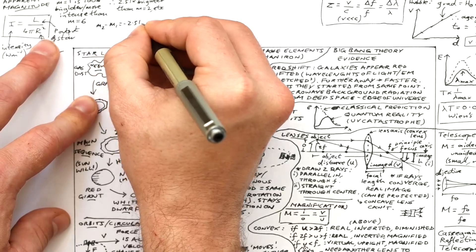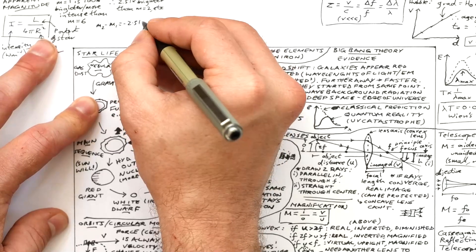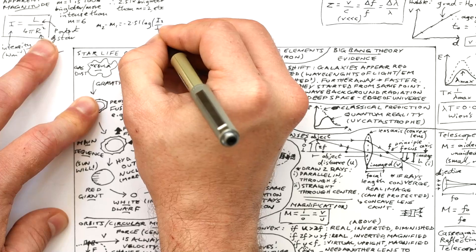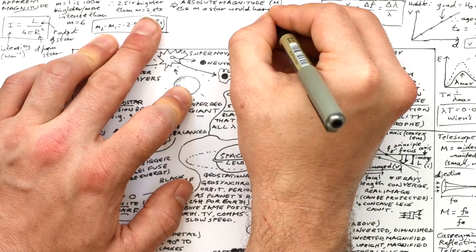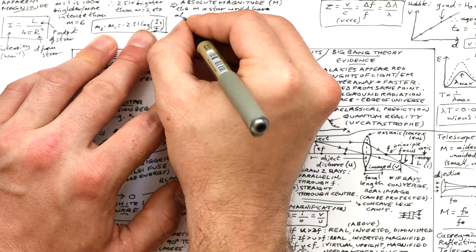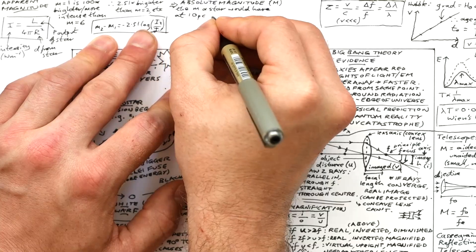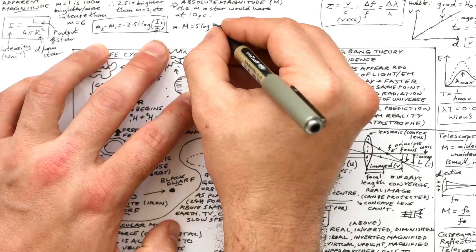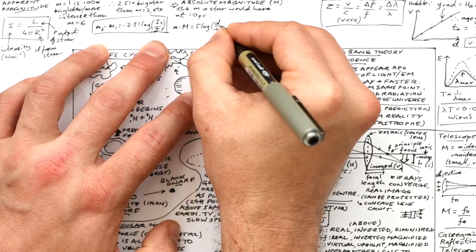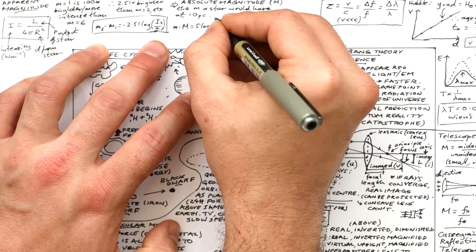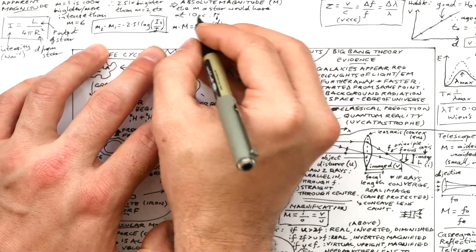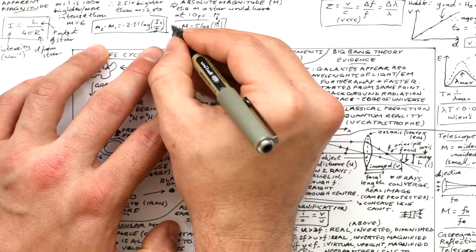Here's the equation for apparent magnitude. The difference in apparent magnitude between two stars is equal to minus 2.51 times the log of the ratio of intensities. Absolute magnitude tries to make it a little bit more objective. This is what the apparent magnitude of a star would be if it was at the arbitrary distance of 10 parsecs away from us. And I'll remind you what the definition of a parsec is at the end. And here's the equation that gives that. Apparent magnitude minus absolute magnitude is equal to 5 times the log of the distance in parsecs divided by 10.